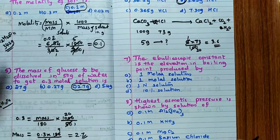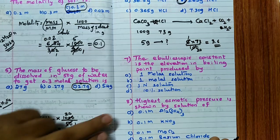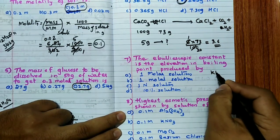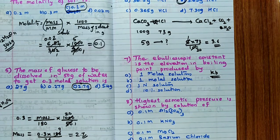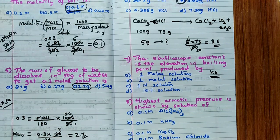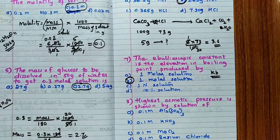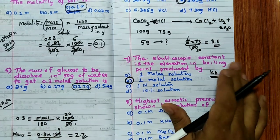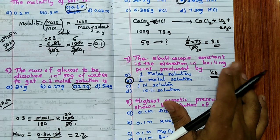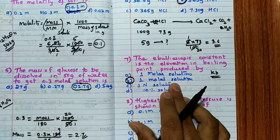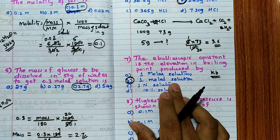Question 7: the ebullioscopic constant KB is defined as the elevation in boiling point produced by a one molal solution. Similarly, KF for depression in freezing point is also defined for a one molal solution. Remember: molality is the key concentration unit in colligative property equations.